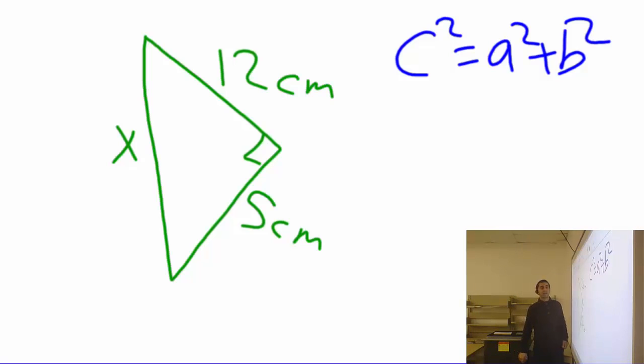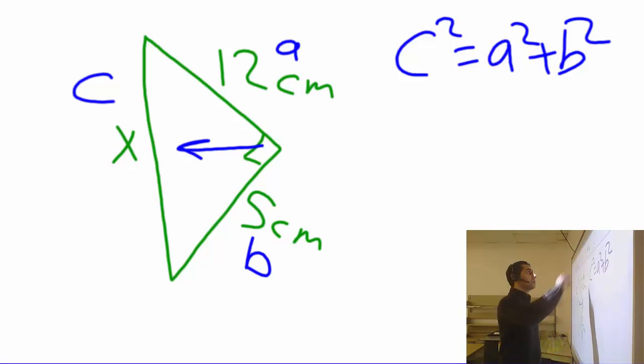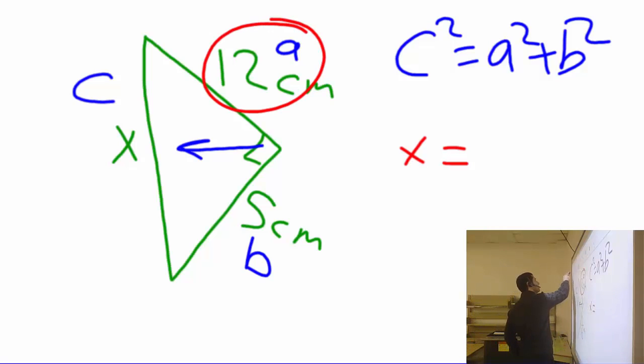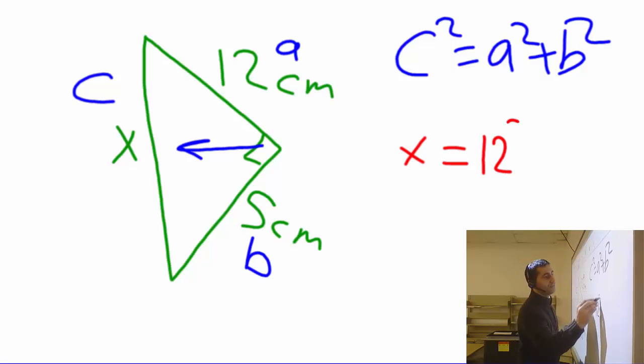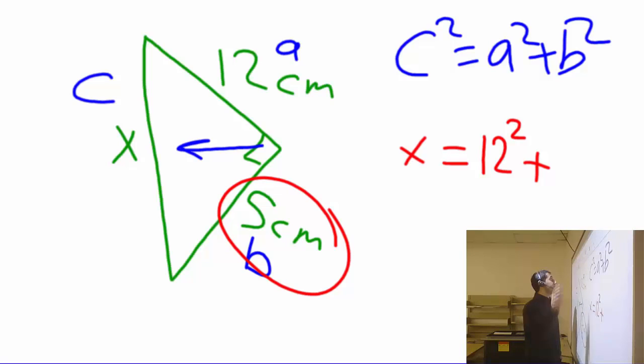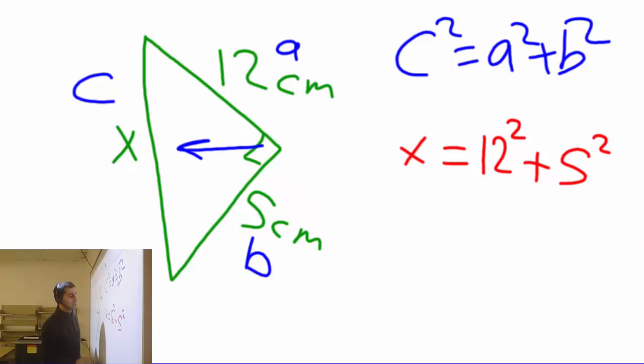And let's figure out which one is A, which one is B, which one is C. C is the most important. That will be C. A and B never matters. Today I'm gonna make this one A, I'm gonna make this one B. Tomorrow I might feel different, but it will never change your answer. So let's go ahead and place the numbers. C is the X. X squared equals A is 12, 12 squared - don't forget the square, many do forget it - plus B is the 5 squared.